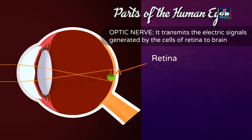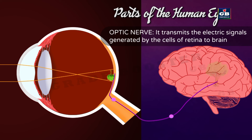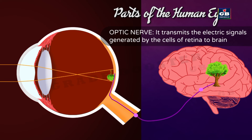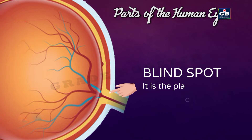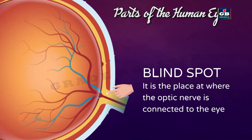Optic nerve transmits the electrical signals generated by the cells of the retina to the brain. So the information collected by the eye is transferred to the brain through the optic nerves. Blind spot is an area on the retina — it is the place where the optic nerve is connected to the eye, meaning the retina is connected to the optic nerve at the blind spot.